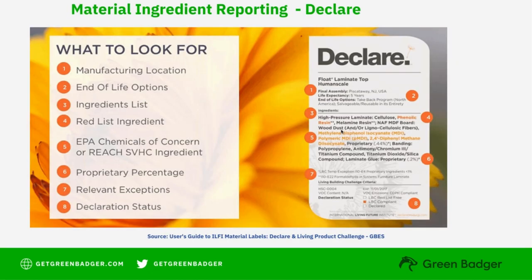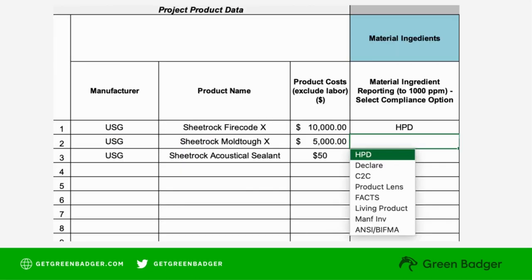We also have an example of a declare label, which tells you what a product is made of in a tidy one-page document. Just make sure the date is valid for the course of construction. To fill this out, simply go to the material ingredient column on the LEED cover sheet and enter the type of ingredient reporting you have for each product. If there is no material ingredient reporting for your product, simply leave that field blank.